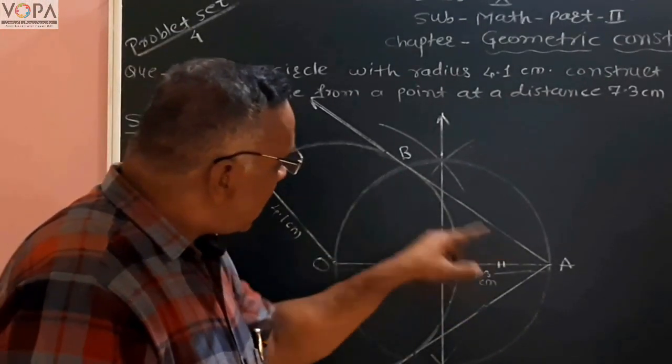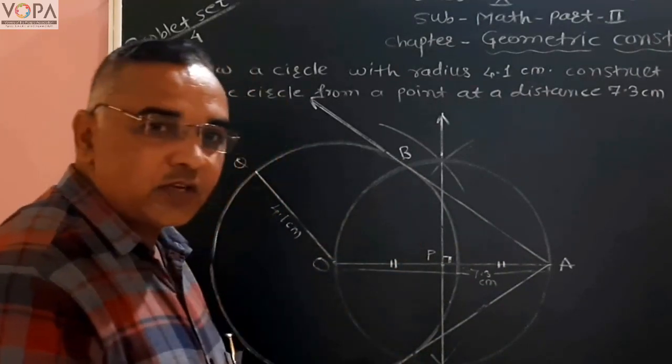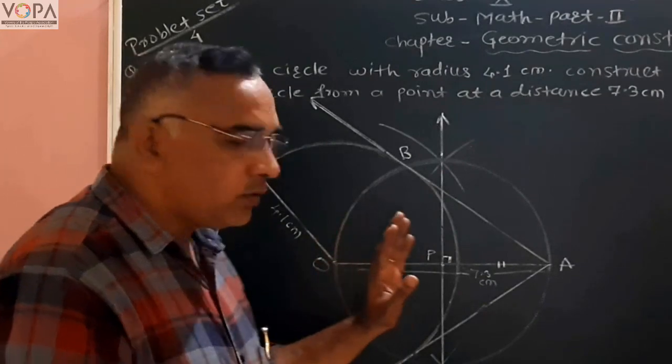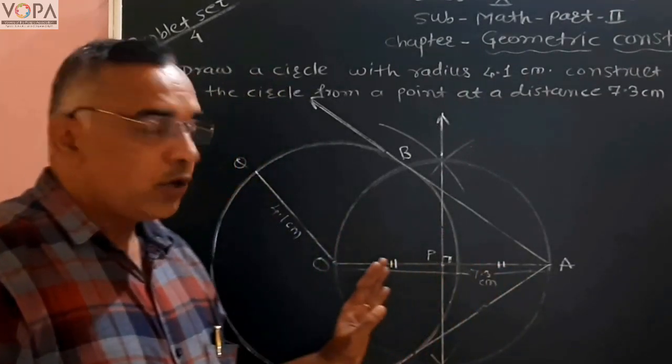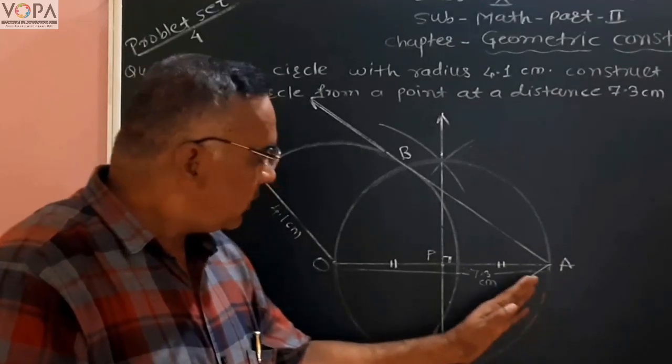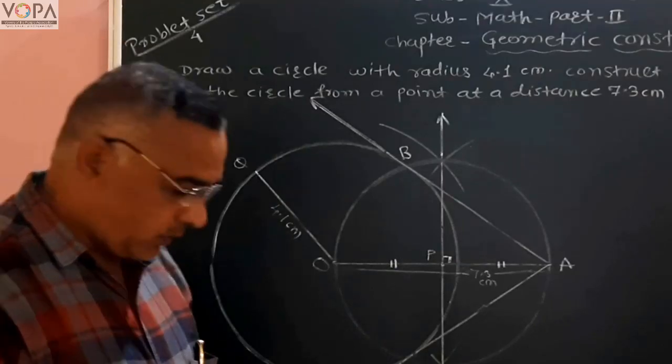BA and CA are tangents to the given circle. Therefore, in this way, to draw tangents from a point outside the circle, two tangents are drawn. Thank you.